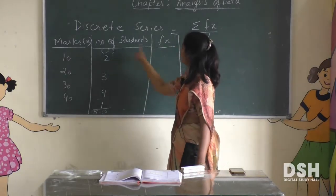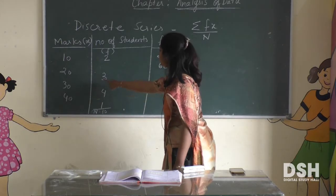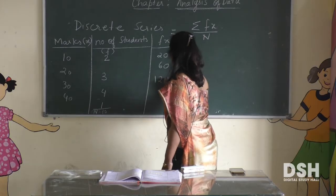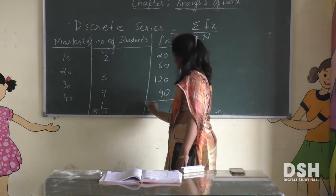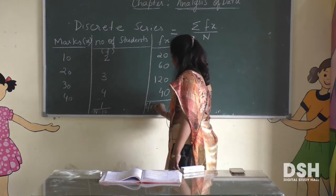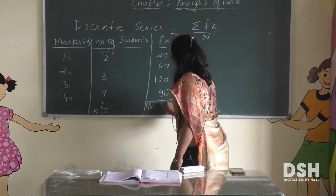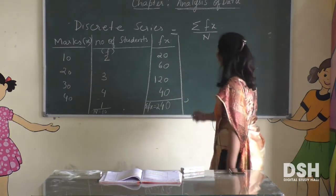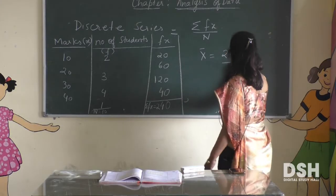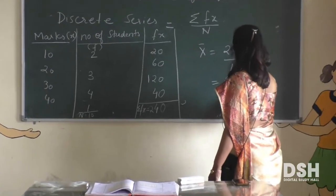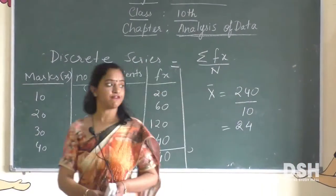We multiply: 10×2=20, 20×3=60, 30×4=120, and 40×1=40. Summing these gives sigma fx = 240. The mean equals sigma fx divided by n, which is 240 divided by 10, so on average each student is getting 24 marks. This is the formula for discrete series.